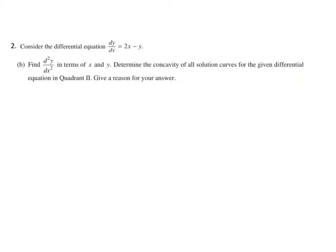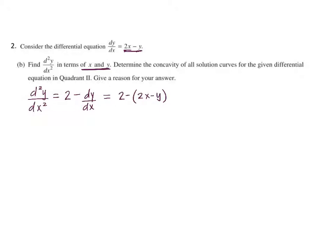The next part wants us to find our second derivative, but notice it wants us to make sure that's in terms of x and y. To find our second derivative, pay attention to notation. The derivative of 2x is 2 minus the derivative of y, which is 1 — but we need to write dy/dx. Here's where we have to be careful: we need that in terms of x and y. So we're going to substitute in place of dy/dx this 2x minus y that we were given, giving us our second derivative in terms of x and y.